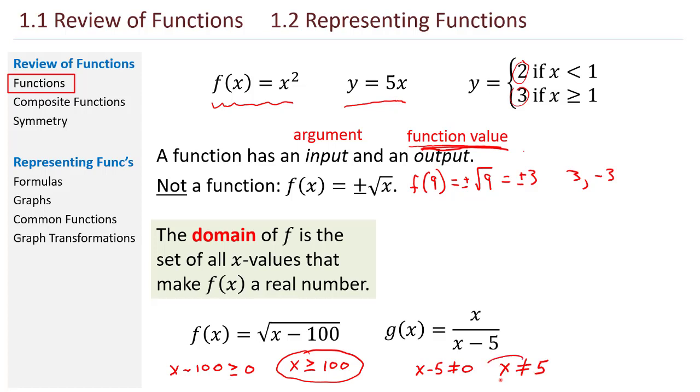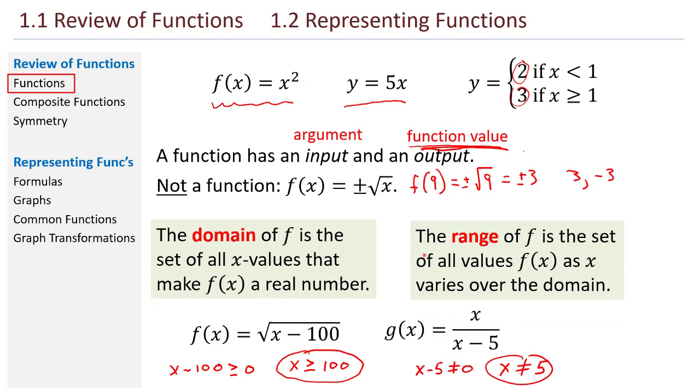So those are the domains of those two functions. Now, the flip side of domain is range. The range of a function f is the set of all the values of f(x) as x varies over the domain. So in this first case, imagine plugging in all possible values of x. What are all the outputs going to look like? And in g, if I plug in every possible value of x, any x that isn't 5, what do all the possible outputs look like? Now, computing range tends to be a much more difficult problem than computing domain. But these aren't too bad. Maybe you can see that it turns out that for f, the range is all non-negative numbers, anything 0 or greater. And g is a little bit trickier. The range of g is any number except 1.